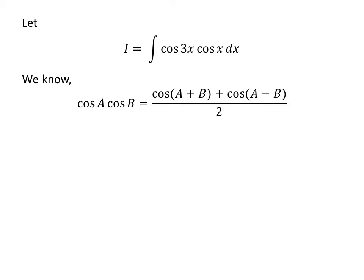We know the trigonometry identity: cosine of a times cosine of b is equal to cosine of a plus b plus cosine of a minus b, upon 2. The video appearing in the upper right corner explains the proof of this trigonometry identity, and the link has also been given in the description section.